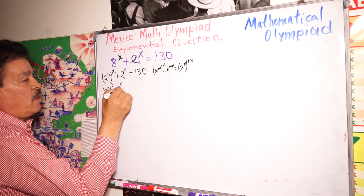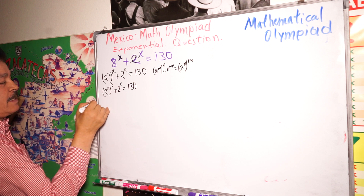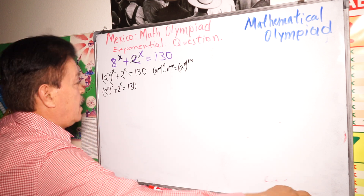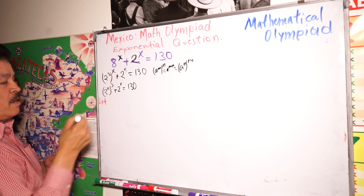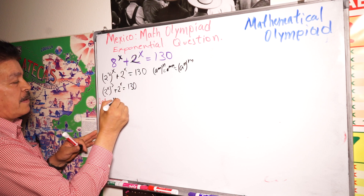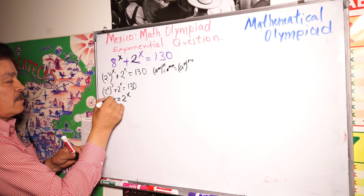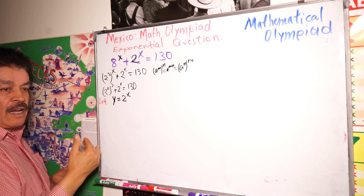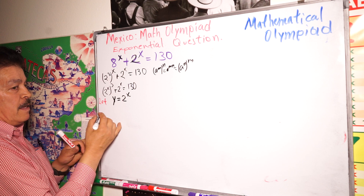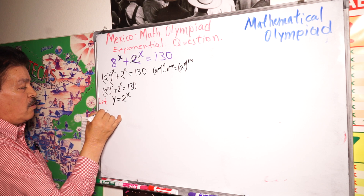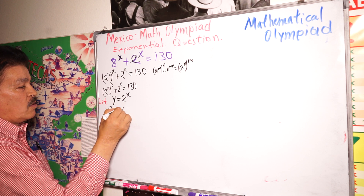So we have 2 to the X power to the third power, plus 2 to the X power equals 130. Now let's write Y equals 2 to the X power. So this is going to become Y to the third power plus Y equals 130.